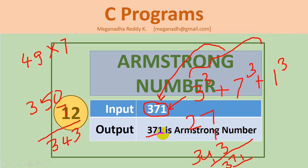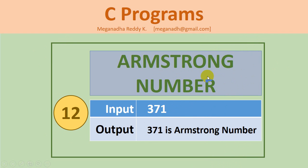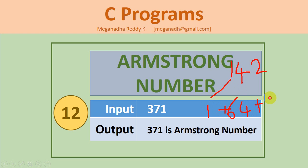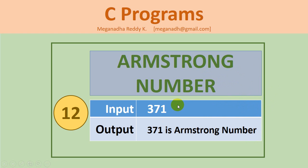Let's take one more example: 142. If we find the cubes: 1 cubed is 1, 4 cubed is 64, and 2 cubed is 8. In this case we are only getting 73, so 142 is not an Armstrong number.